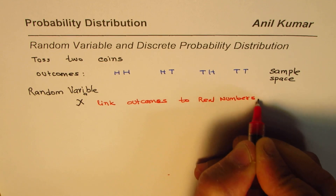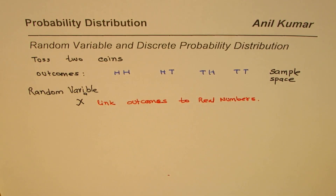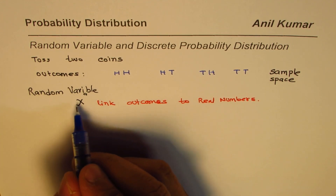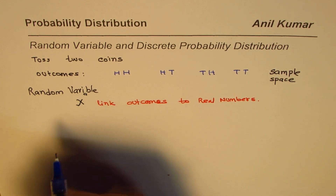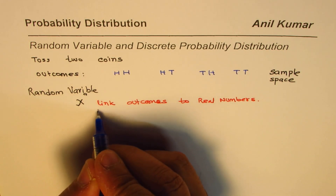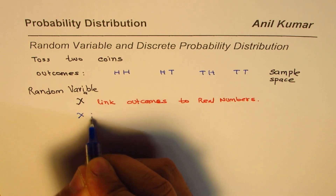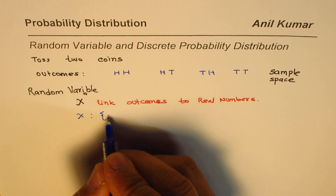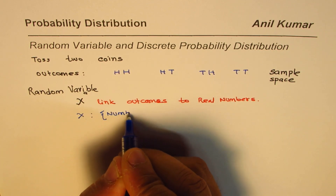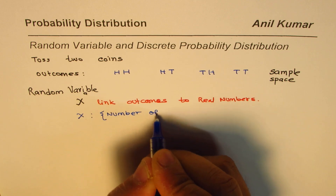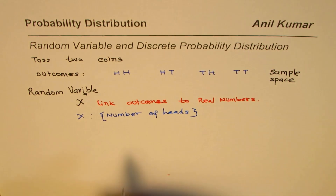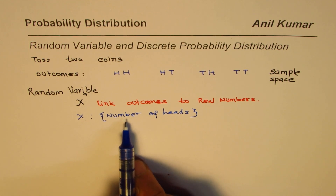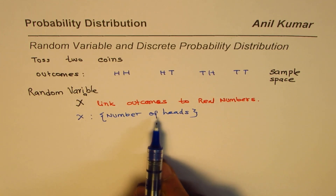Depending on our interest, we will create a function and define X as a random variable. So X in our case will be defined as a function — we could say the number of heads in this experiment. Number of heads is a real number.